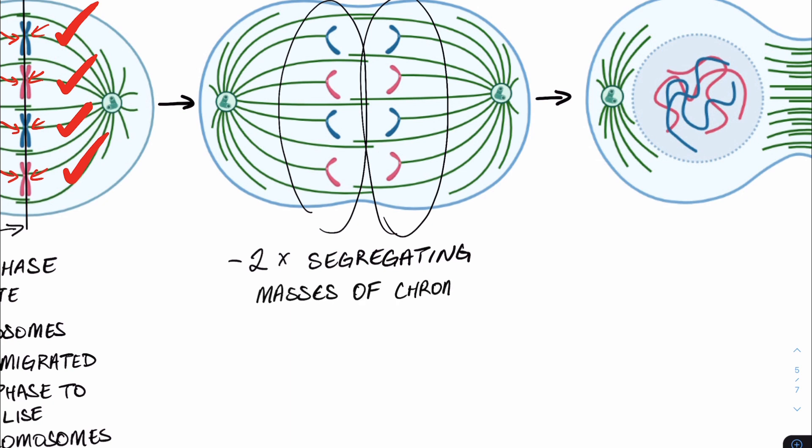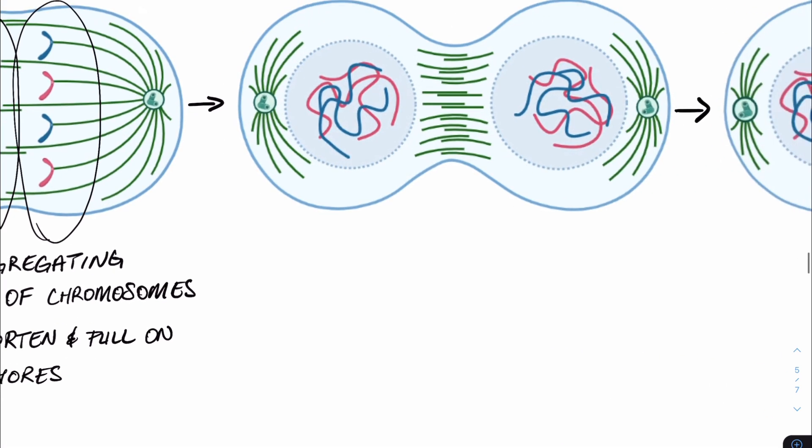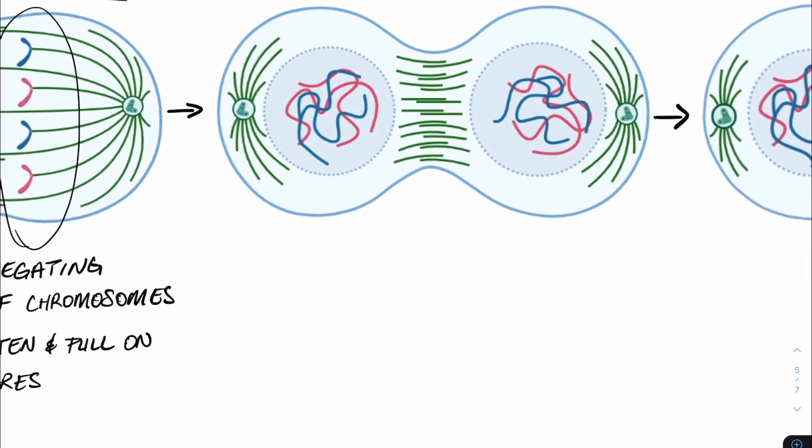And during anaphase, we can see two segregating masses of chromosomes, because the sister chromatids have been cleaved at the centromere, and each one is pulled towards its respective spindle pole. This pulling occurs via shortening of the microtubules, thus applying tension on the stable microtubule kinetochore complex and pulling the genetic material towards its destined daughter cell.